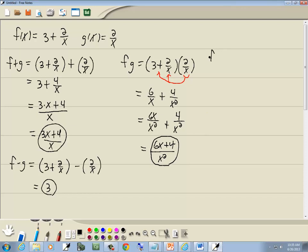And last operation is f divided by g. Again, there's no need to really put parentheses here. It doesn't hurt anything. But the fraction symbol separates it. So I'm going to have 3 plus 2 over x, all over 2 over x.